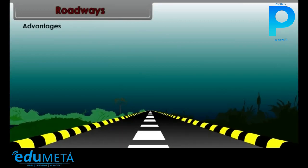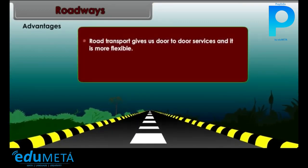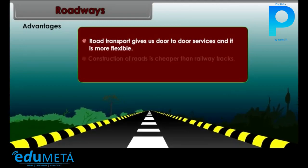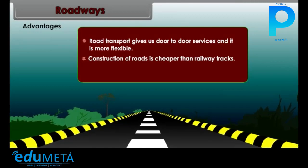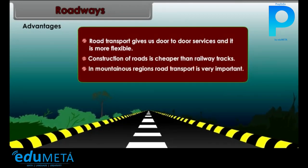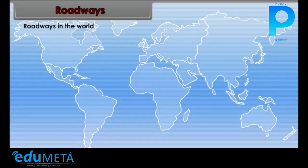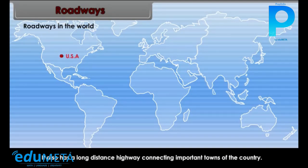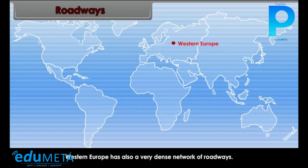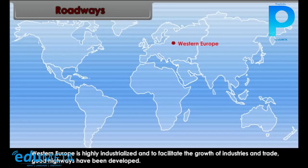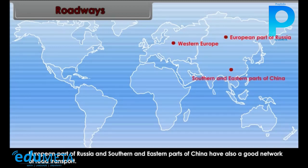Roadways — Advantages: Road transport gives us door-to-door services and it is more flexible. Construction of roads is cheaper than railway tracks. In mountainous regions, road transport is very important. The density of road transport is very high in the USA, which also has a long-distance highway connecting important towns of the country. Western Europe has a very dense network of roadways to facilitate the growth of industries and trade. European Russia and southern and eastern parts of China also have a good network of road transport.